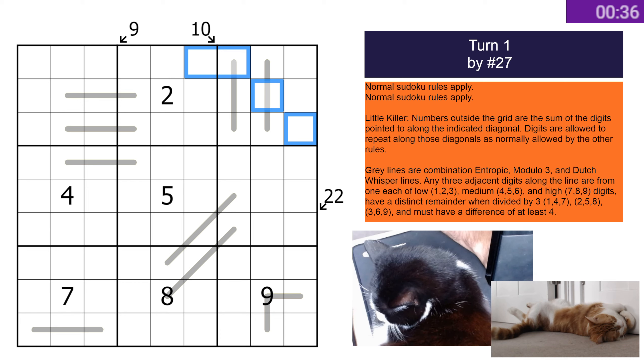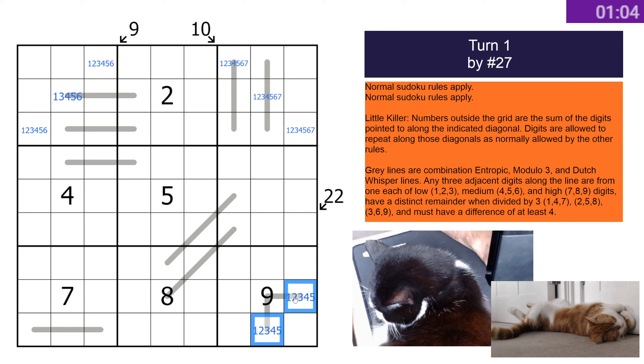So I've got standard little killers, and then the grey lines here are a combination of Entropic Modulo 3 and Dutch Whispers. Do they follow all three rules? Yeah. Interesting. So, I should probably just actually think about that, shouldn't I? Entropic Modulo and Dutch Whisper.